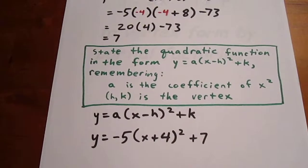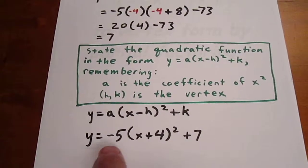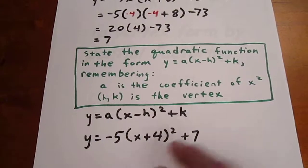Using all that information allows us to state that y equals negative 5 times x plus 4 quantity squared plus 7.